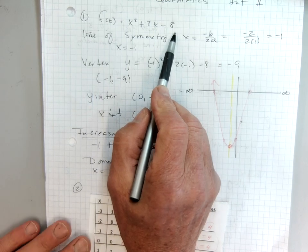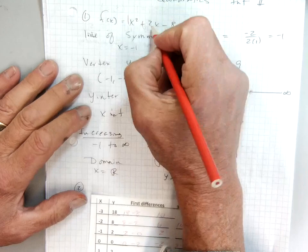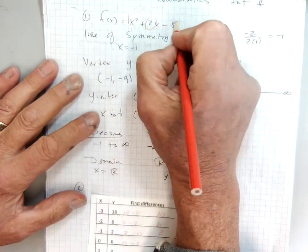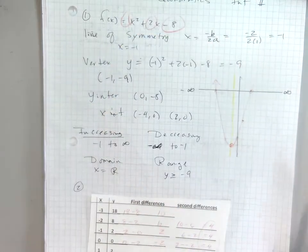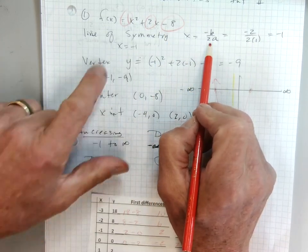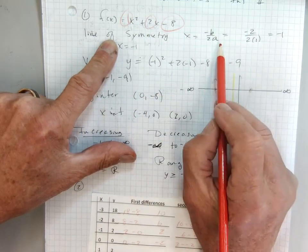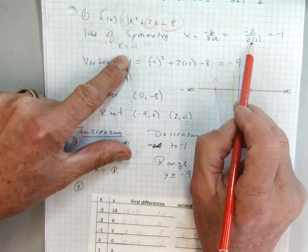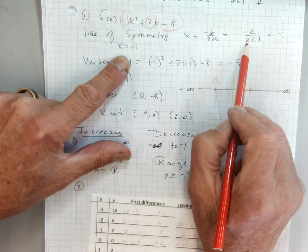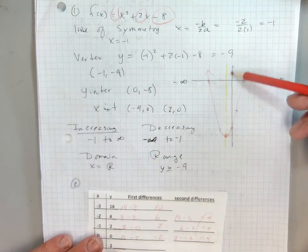I know it's in what I call general form, and so then I know that a is 1, b is 2, and c is negative 8. So I'm going to use my equation negative b over 2a to find the line of symmetry. So b is negative 2 and a is 1, so negative 2 divided by 2 times 1 is negative 1. So I know that my line of symmetry is right there at negative 1.